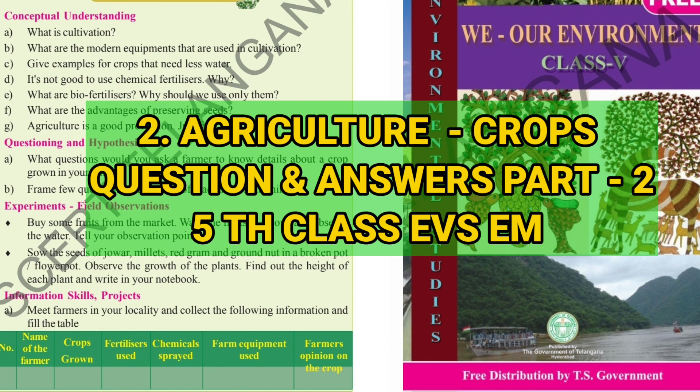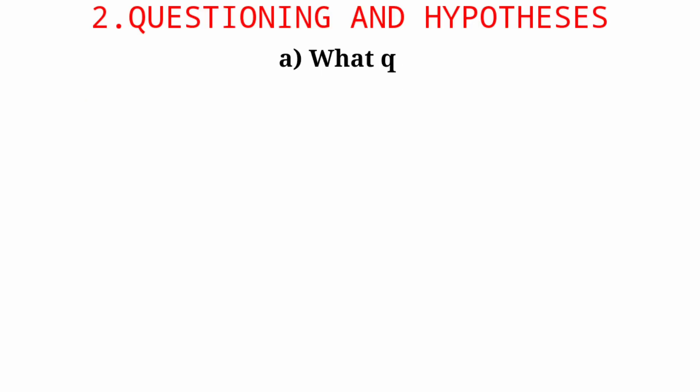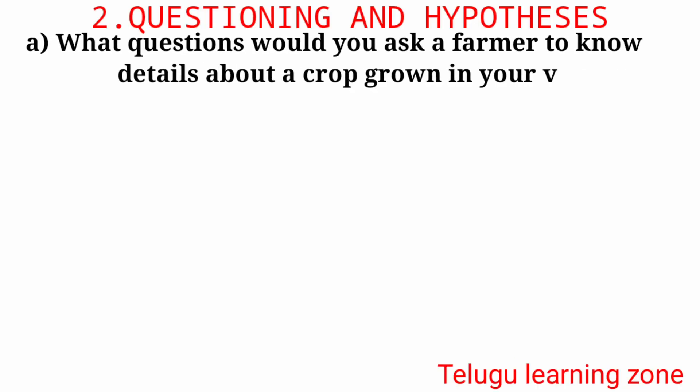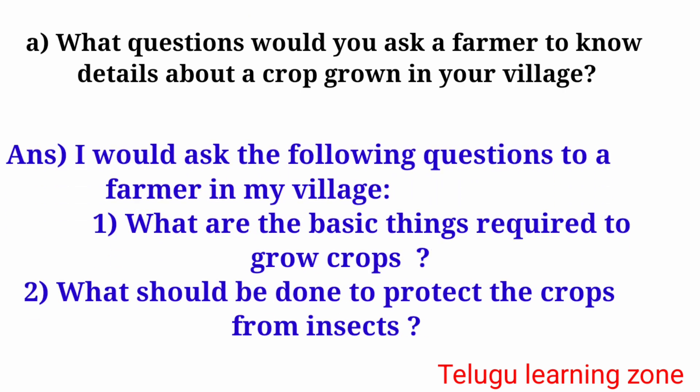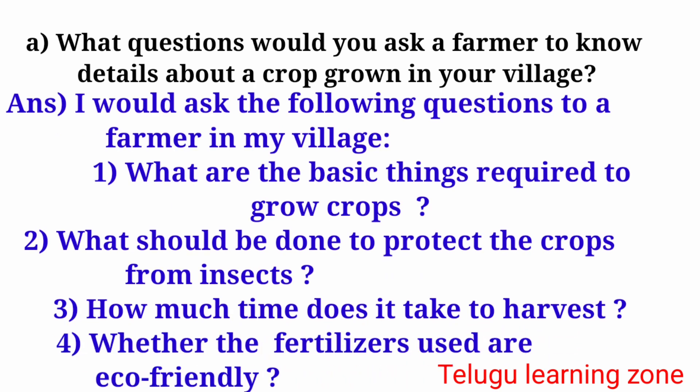Part 2: Questioning and Hypothesis. Question A: What questions would you ask a farmer to know details about a crop grown in your village? Answer: I would ask the following questions to a farmer in my village. 1. What are the basic things required to grow crops?